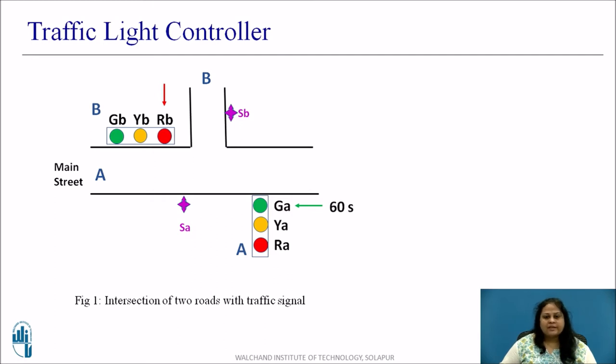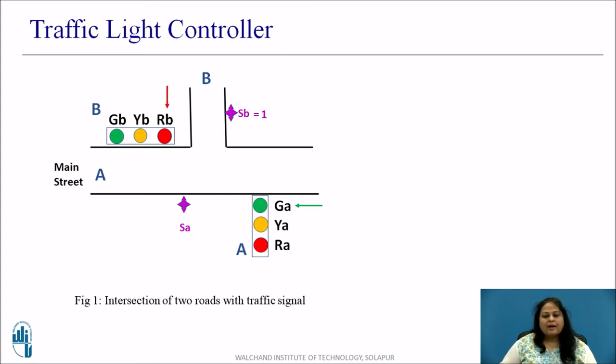When A is green it continues to remain green for at least 60 seconds. At the end of 60 seconds it checks the sensor SB value. Irrespective of value of SA if SB equal to 1 then the light changes in order to make the light of street B green.